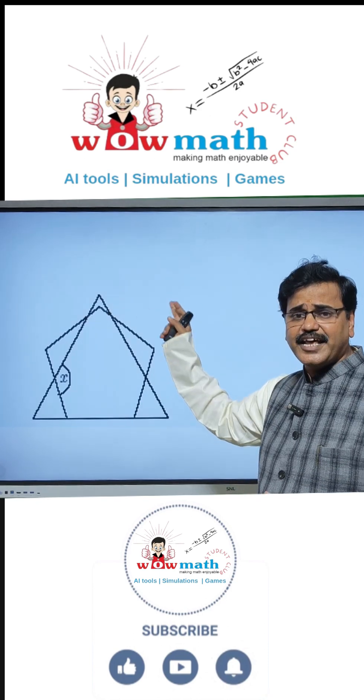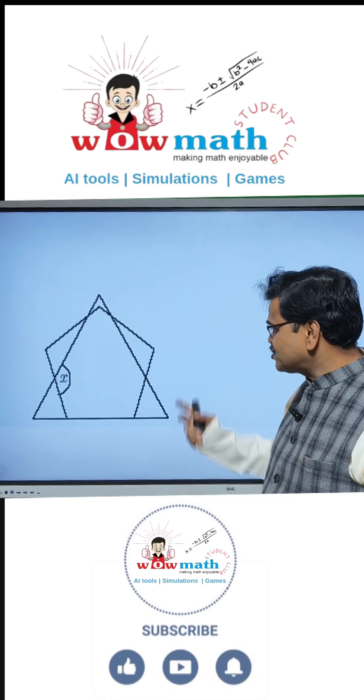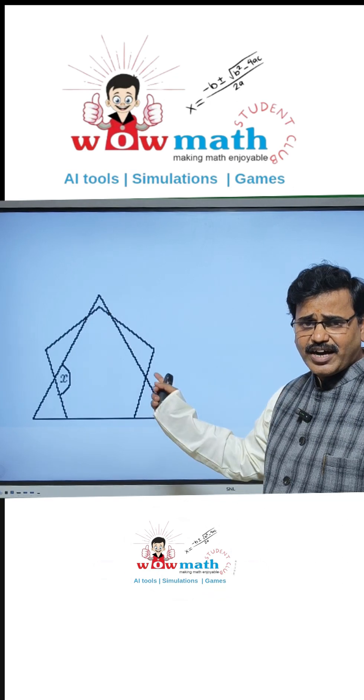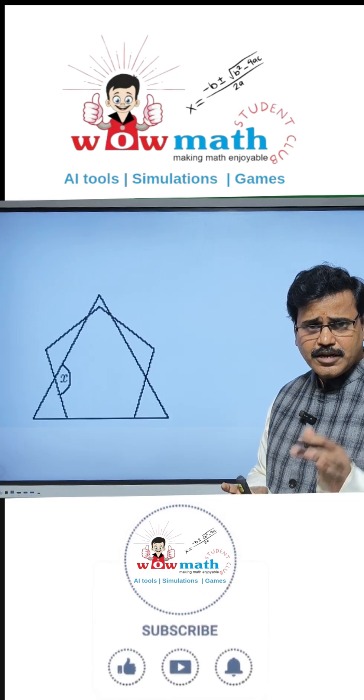It is an equilateral triangle and a regular pentagon. If these two are intersecting like this, what is the angle X? Please find out.